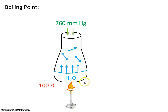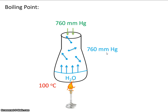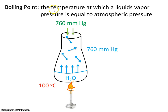Let's continue to heat it up. We reach 100 degrees and have more gas molecules, and finally these gas molecules are exerting 760 millimeters of mercury of pressure. When the vapor pressure of this gas is equal to the atmospheric pressure pushing down, we have boiling. That's what boiling point is — the temperature at which a liquid's vapor pressure is equal to atmospheric pressure.